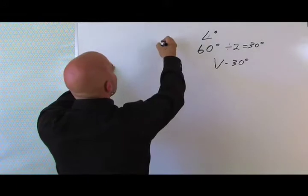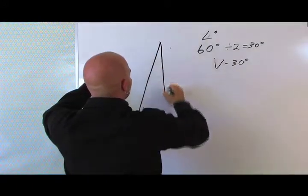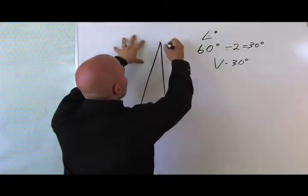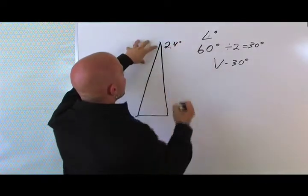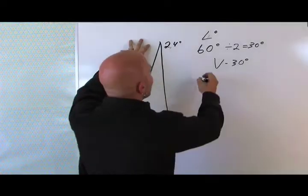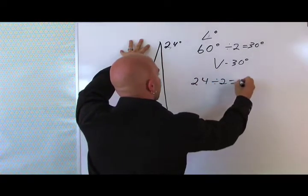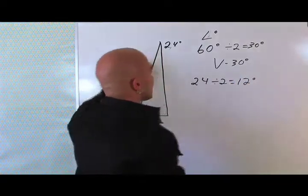Here's a really tall skinny pyramid. Let's say that this pyramid is 24 degrees when you measure this angle. So we take 24, divide it by 2, and now we know that this pyramid will produce a 12-degree vibration.